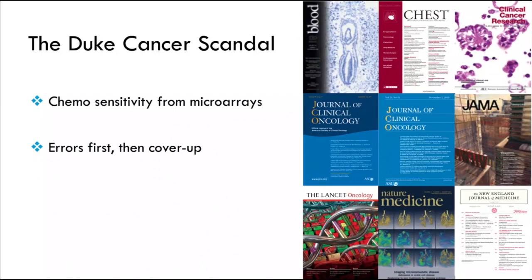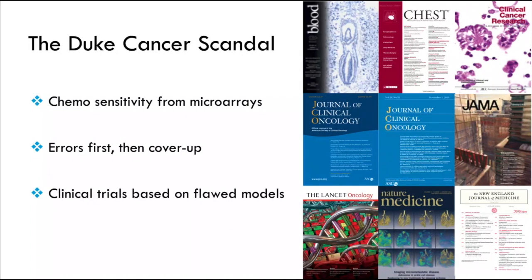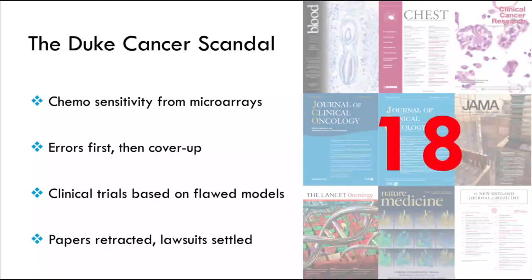The media coverage focused on the fact that the researchers tried to cover up these errors and press toward clinical trials, even though there were open questions about their methods. Unfortunately, 110 patients were enrolled in four clinical trials and were allocated to chemotherapy treatment arms based on these flawed models. In the end, 18 papers had to be retracted and Duke settled a number of lawsuits for an undisclosed amount.